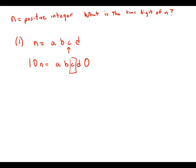And in particular, if they're telling us that the hundreds digit of 10n is 6, well, the hundreds digit of 10n has to equal the tens digit of n. So the tens digit of n would have to be 6. So this statement by itself is completely sufficient to answer the question.